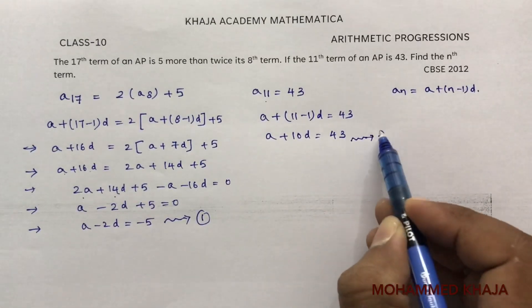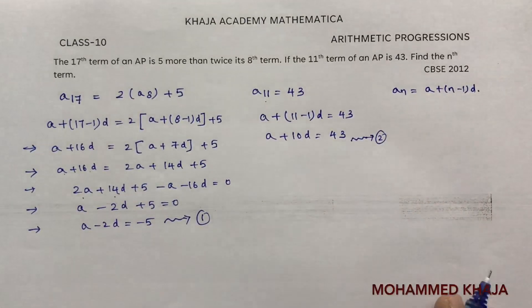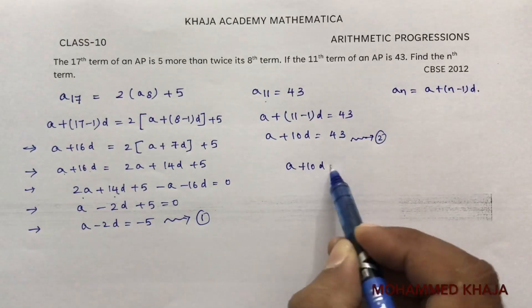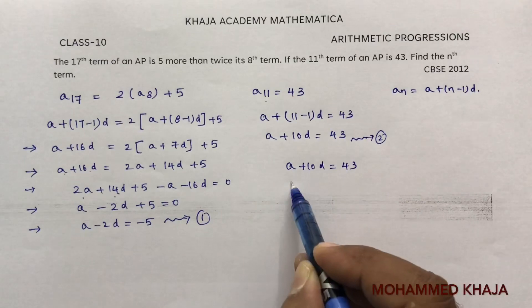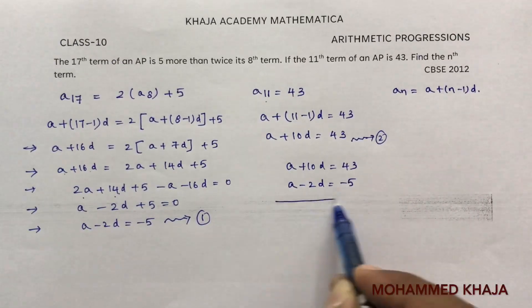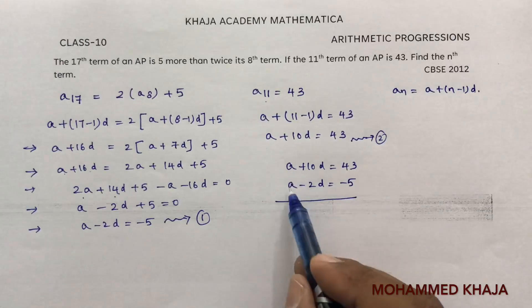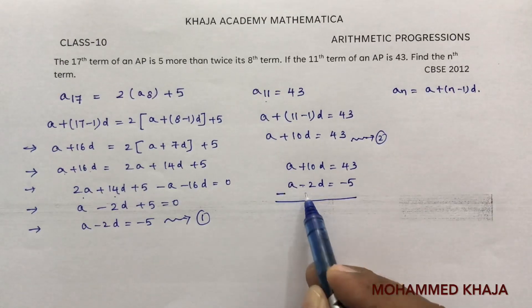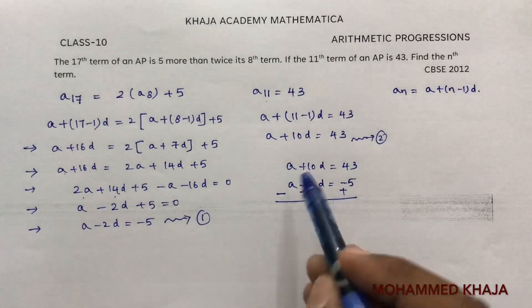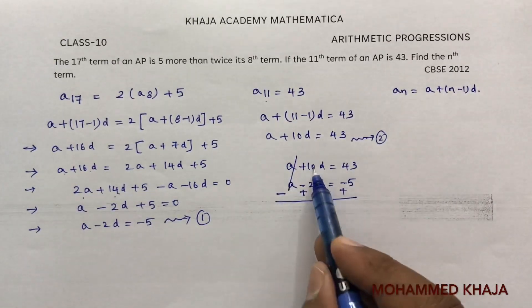And this is equation 2. Now if I eliminate these two equations, a plus 10d is 43, a minus 2d is minus 5. Both a coefficients are 1, so directly I will subtract. A and a cancel.